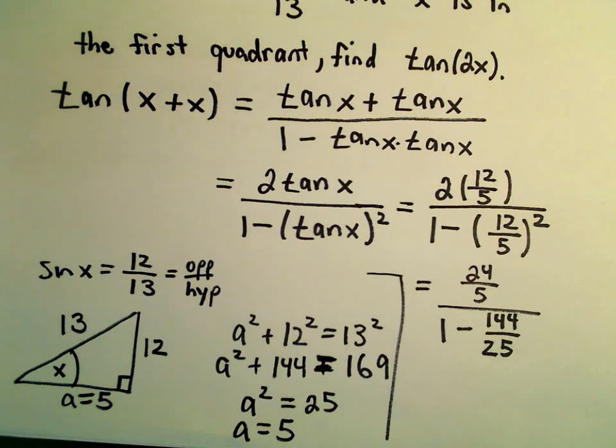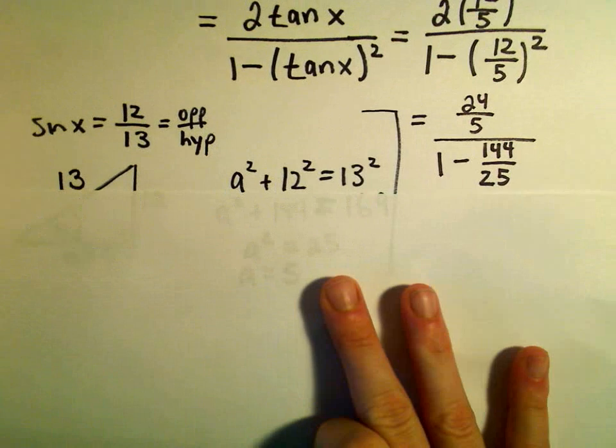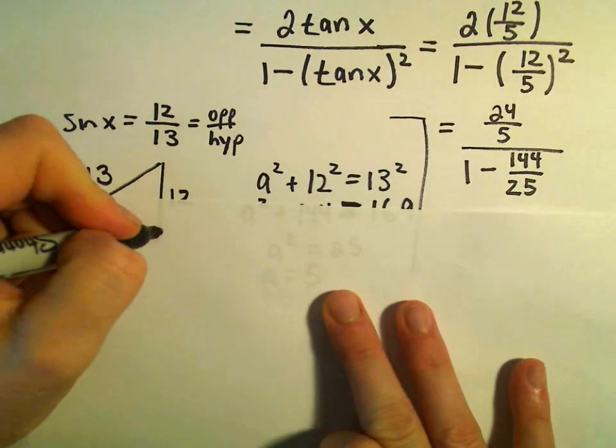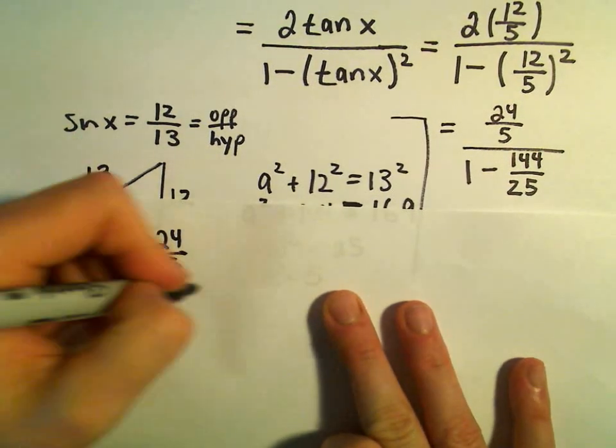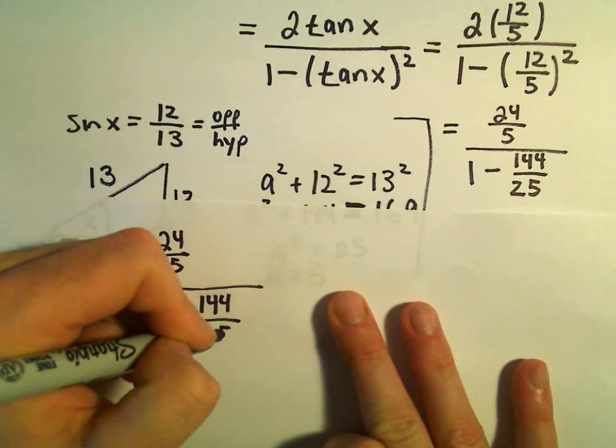I think we're going to run out of room here a little bit. So we've got 24 over 5, over 1 minus 144 over 25.